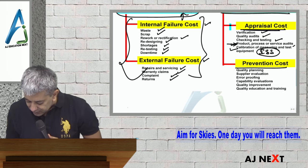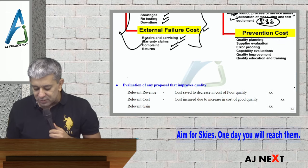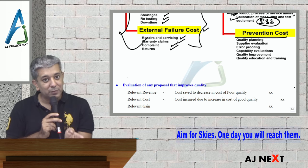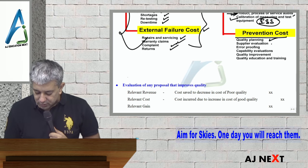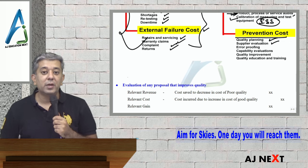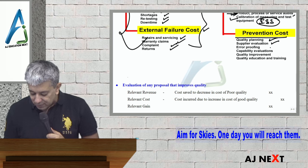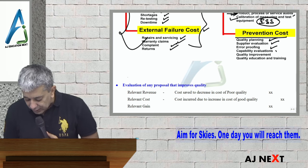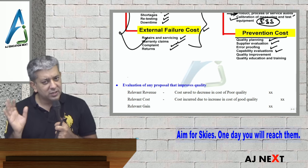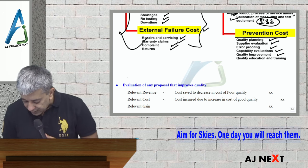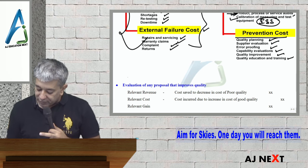Prevention costs. Remember: appraisal costs are incurred after the product is made, while prevention cost is incurred before the product is made — something that helps you prevent losses. Examples: plan your production, evaluate suppliers to check if the raw material they are giving us is proper before we use it, error proofing, capability evaluations — try to find out if workers and machines are capable before starting production so that losses don't happen — quality improvements, quality education and training. These are popular examples of prevention costs.